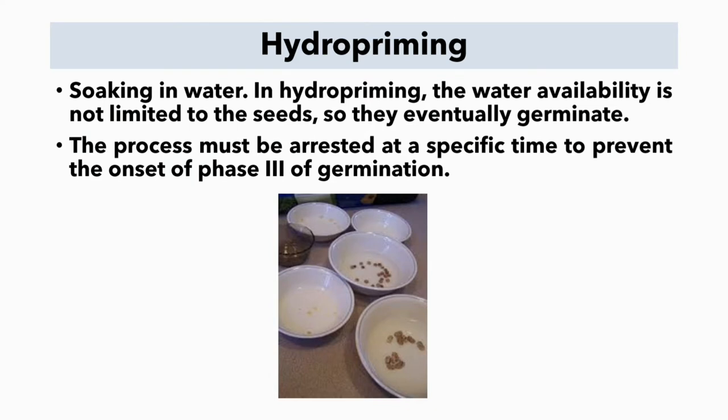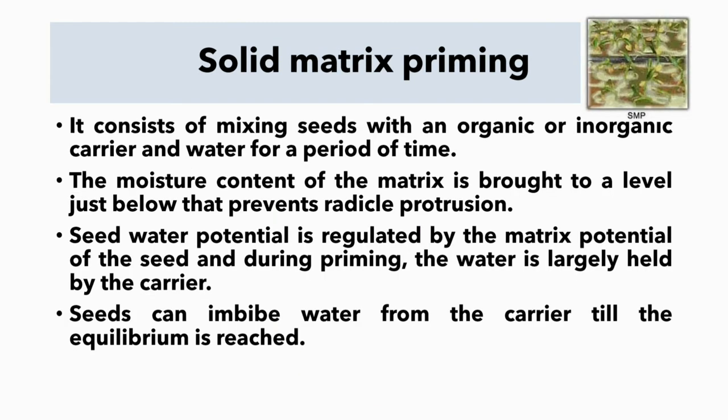In hydro priming, the water availability is not limited to the seeds, so they eventually germinate. The process must be arrested at a specific time to prevent the onset of phase 3 of germination.